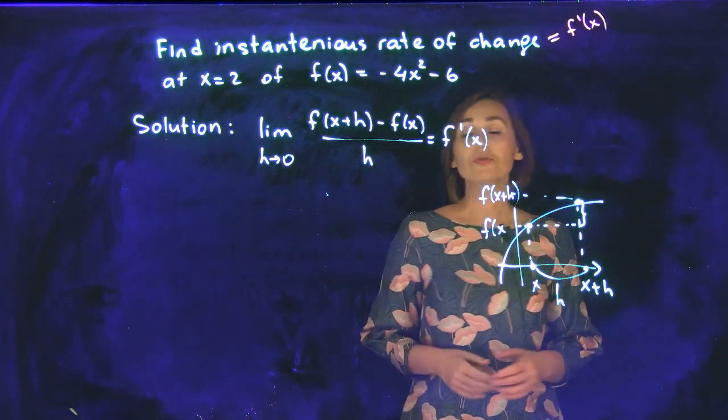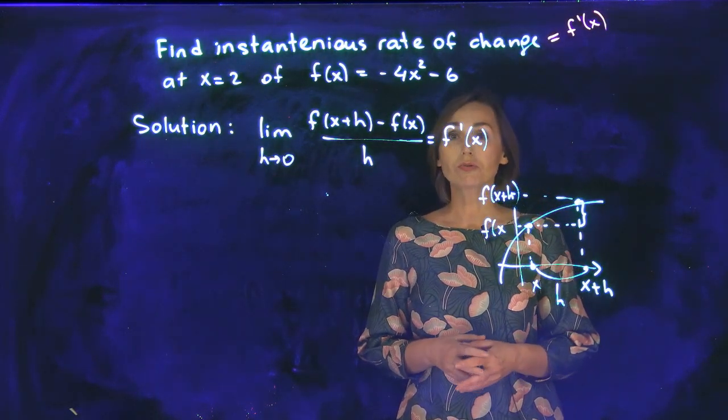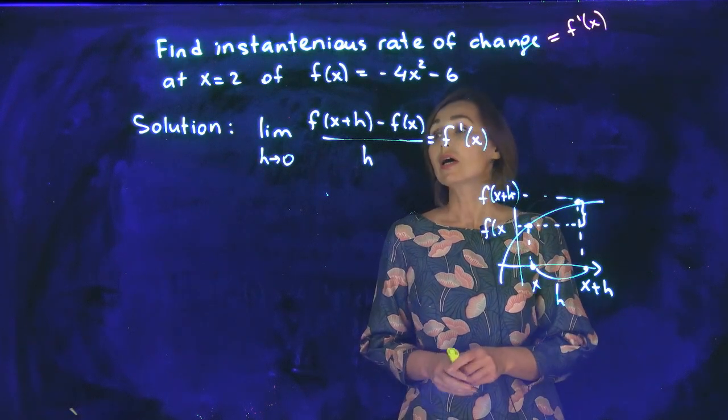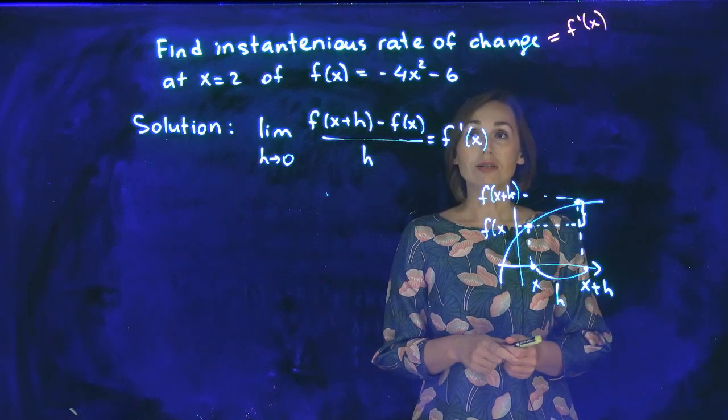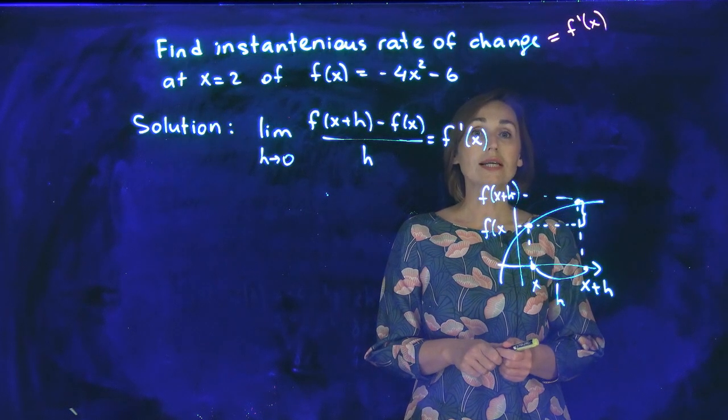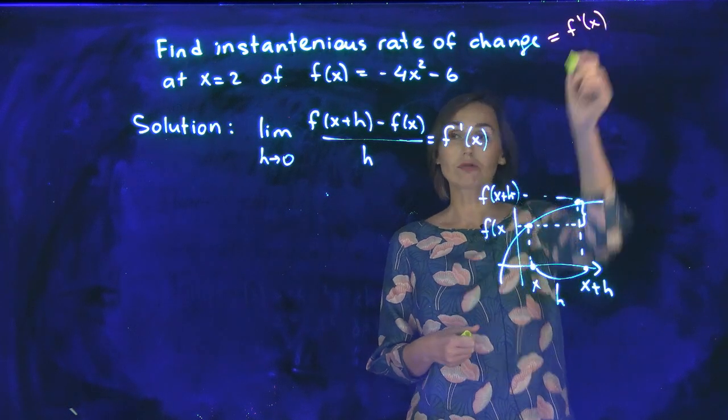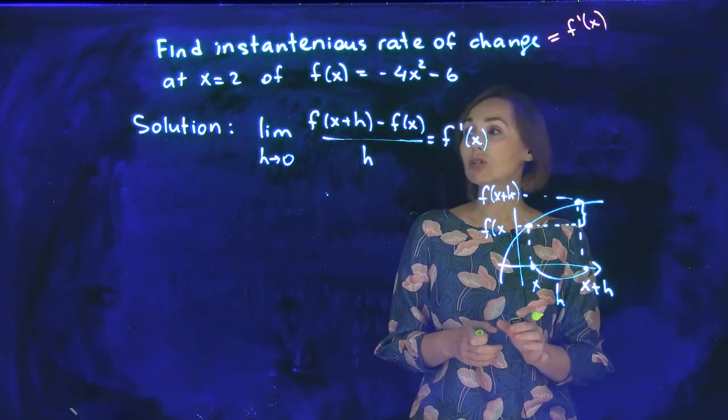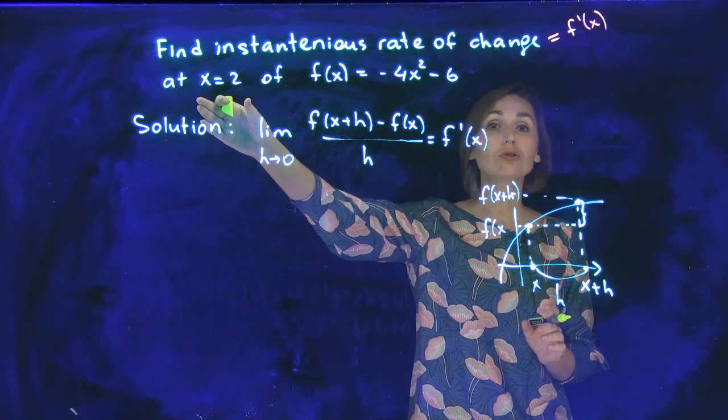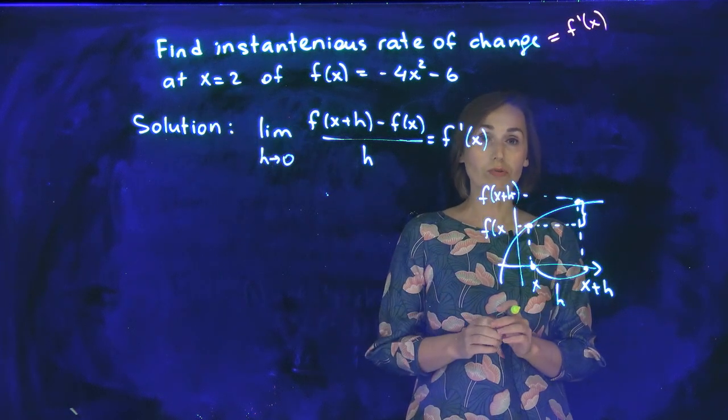Finding instantaneous rate of change of the function negative 4x squared minus 6 at the point x equals 2. First of all, instantaneous rate of change of the function is derivative of the function f prime at x. So you need to find derivative using limit definition and then plug in 2 to the derivative that you found.